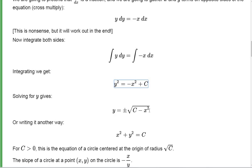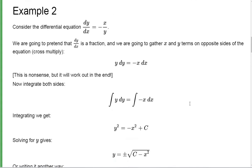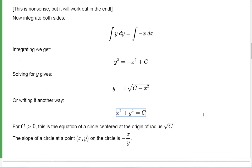Now we could stop there, or instead of solving for y, if we rewrite this equation by adding x squared to both sides, we get x squared plus y squared equals c. Hopefully you recognize that equation — that's the equation of a circle centered at the origin with radius squared equal to c. So if you have the derivative of your function equal to negative x over y, then the function you're looking at is really a circle.